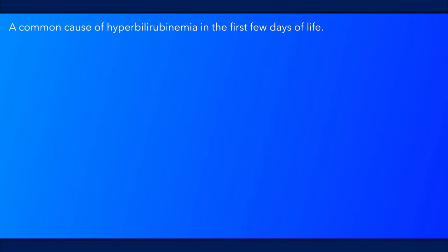Hemolytic disease of the newborn is a common cause of unconjugated hyperbilirubinemia in the first few days of life. It occurs when there is an incompatibility between maternal and fetal blood types. The most common causes of immune-mediated maternal-fetal blood type incompatibility leading to hemolytic disease in the newborn are ABO incompatibility and rhesus isoimmunization.